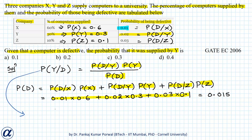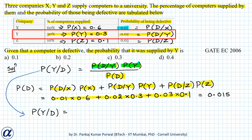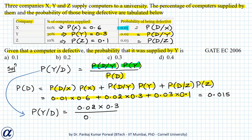So the probability that the computer was supplied by Y given it is defective equals P(D | Y)·P(Y) divided by P(D), that is 0.02 × 0.3 divided by 0.015. Simplifying, this gives 0.4, so option D is correct.